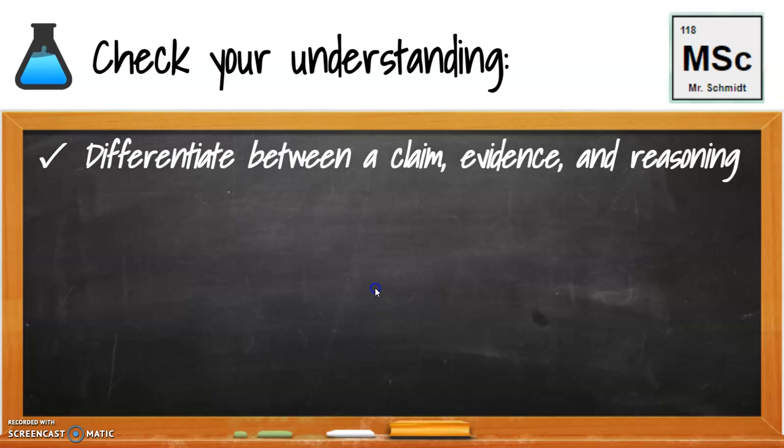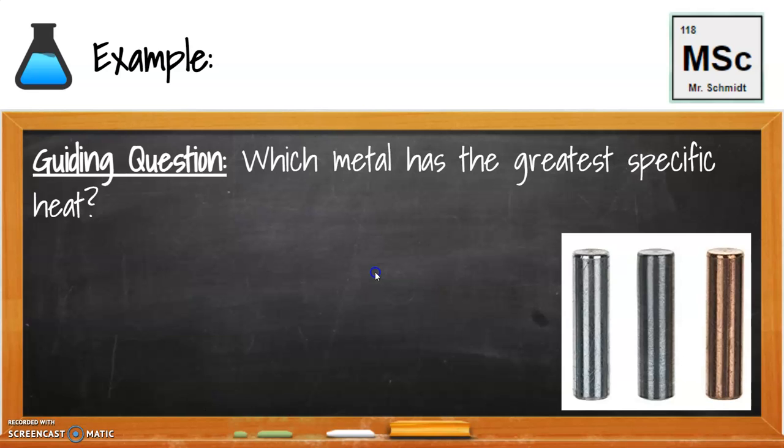Let's take a moment to check your understanding. Can you differentiate between a claim, evidence, and reasoning? Here's an example. I kind of have two of them here. So the first thing here is our guiding question. Which metal has the greatest specific heat? So we have three different cylinders here in our picture. And we'll actually probably do this lab here in the classroom. But which one of these three metals has the greatest specific heat? Your job would then be to construct an experiment to help you gather data to make your claim and evidence.